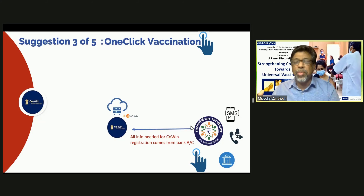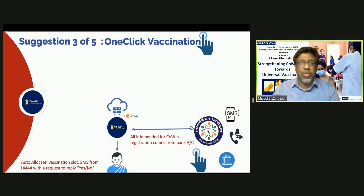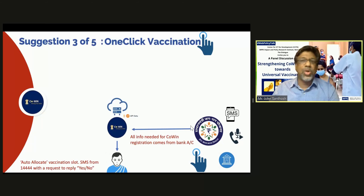That's all the information CoWIN is asking for to get anybody registered. It gets into the CoWIN app, and the CoWIN app has the intelligence to figure out where the vaccine is available in the locality of the person who requested it. Instead of the person booking a slot, the system tells them: you've been allocated a vaccine slot at a specific government vaccination center in your locality on a given date and time.